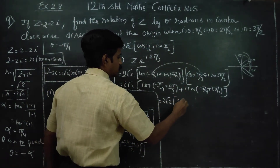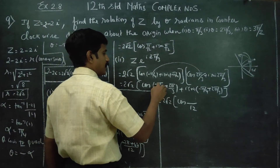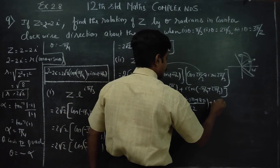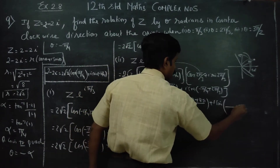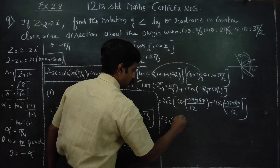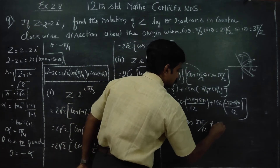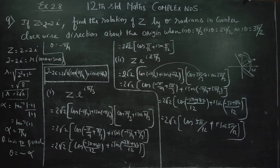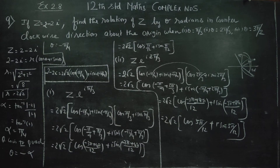2√2·cos of (LCM is 12): −3π + 8π over 12, plus i·sin of the same. Simplifying: −3π + 8π = 5π. Therefore your answer will be 2√2·cos(5π/12) + i·sin(5π/12). This is the new position of the complex number when you rotate by 2π/3. Rotation in the anticlockwise direction is just multiplication by e^(i·2π/3) — Euler's formula — and you add the arguments.